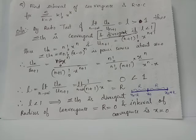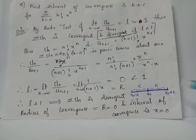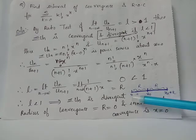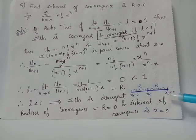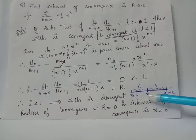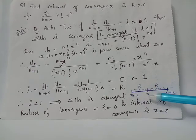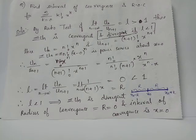The geometric interpretation of radius of convergence and interval of convergence for a power series is: consider the open interval (x_0 minus R, x_0 plus R) centered at x_0; then R is the distance from this center to either of the endpoints, and this distance R is the radius of convergence.